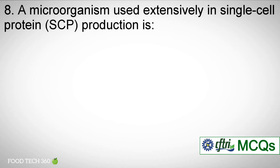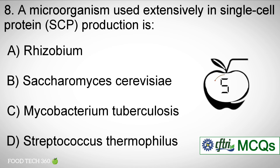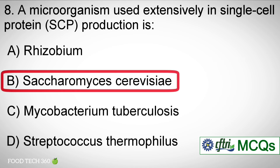Question number 8. A microorganism used extensively in single cell protein production is: Options: A. Rhizobium, B. Saccharomyces cerevisiae, C. Mycobacterium tuberculosis, D. Streptococcus thermophilus. Correct answer: B. Saccharomyces cerevisiae.